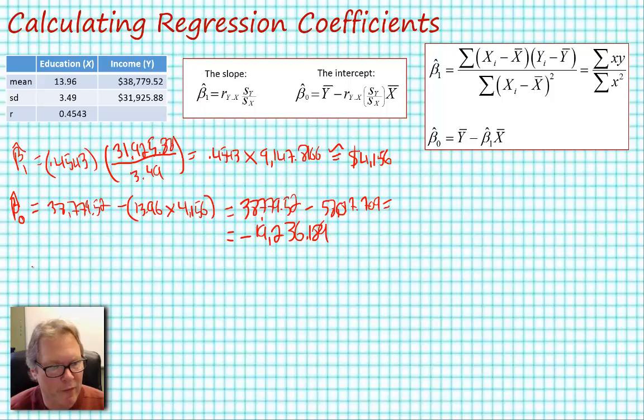So let's go ahead and build our full model. We are now saying based on our model that predicted values of income, notice the hat over income, are equal to approximately minus $19,236 plus our beta hat sub 1, which is $4,156, times education.